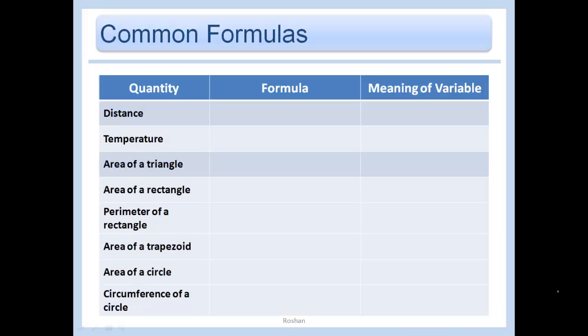Let's start off with some common formulas. Distance can be written as a function of the rate that you're going at and the time that you've traveled. In other words, distance equals rate times time. It has a nice little ring to it.